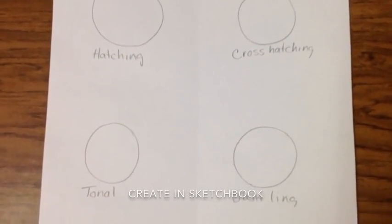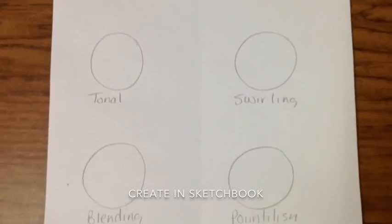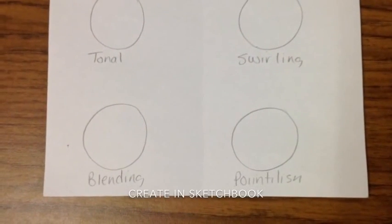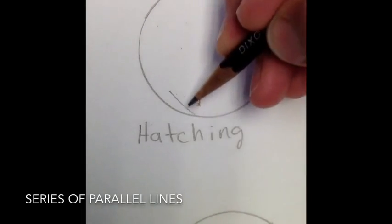In your sketchbook, you're going to label a page, draw six pretty decent sized circles, and get them labeled. The first technique is hatching.